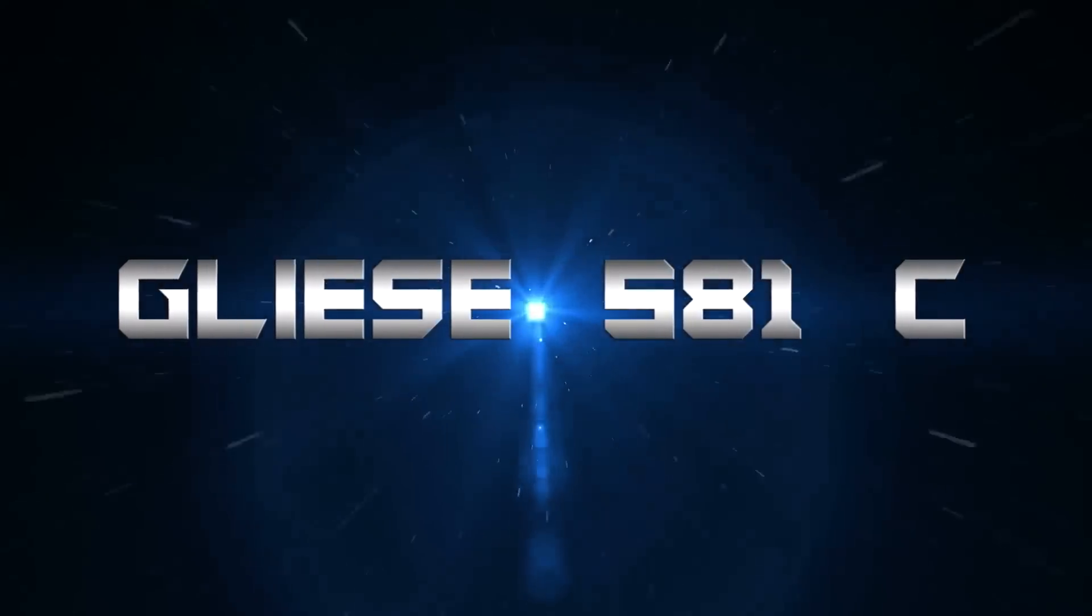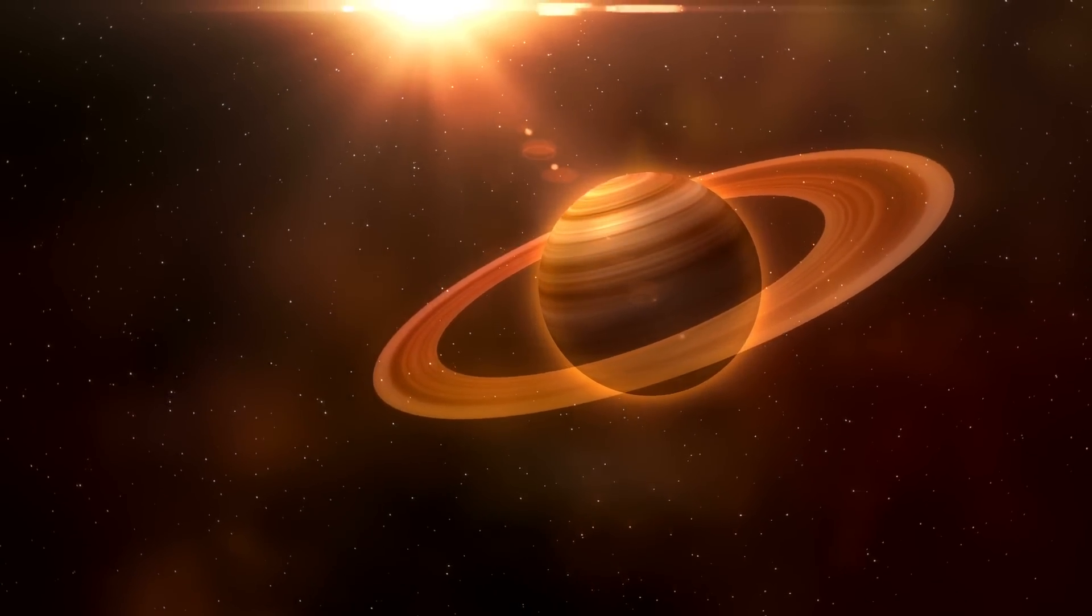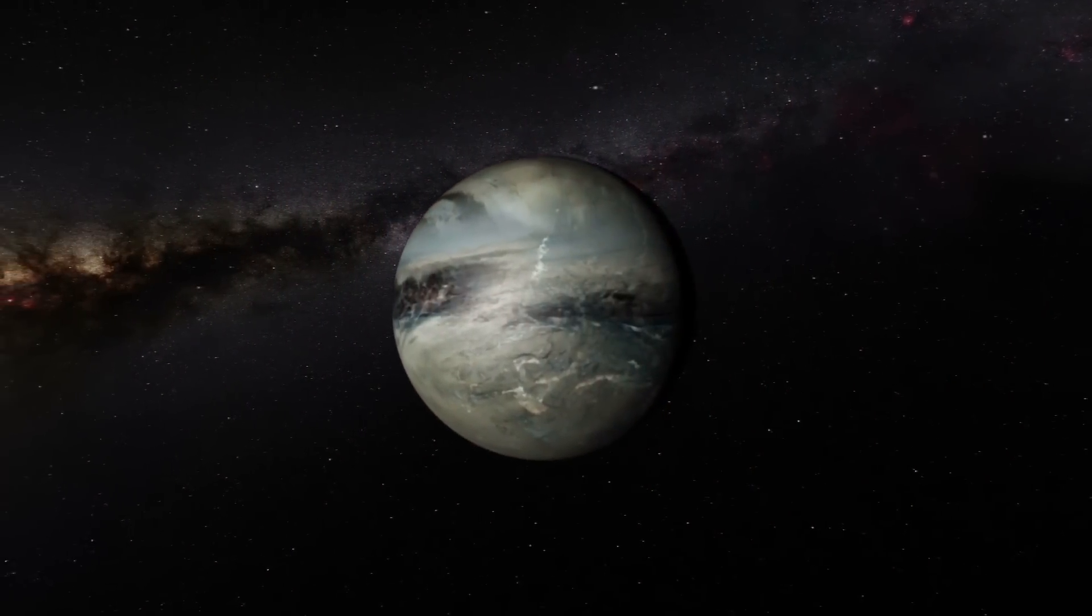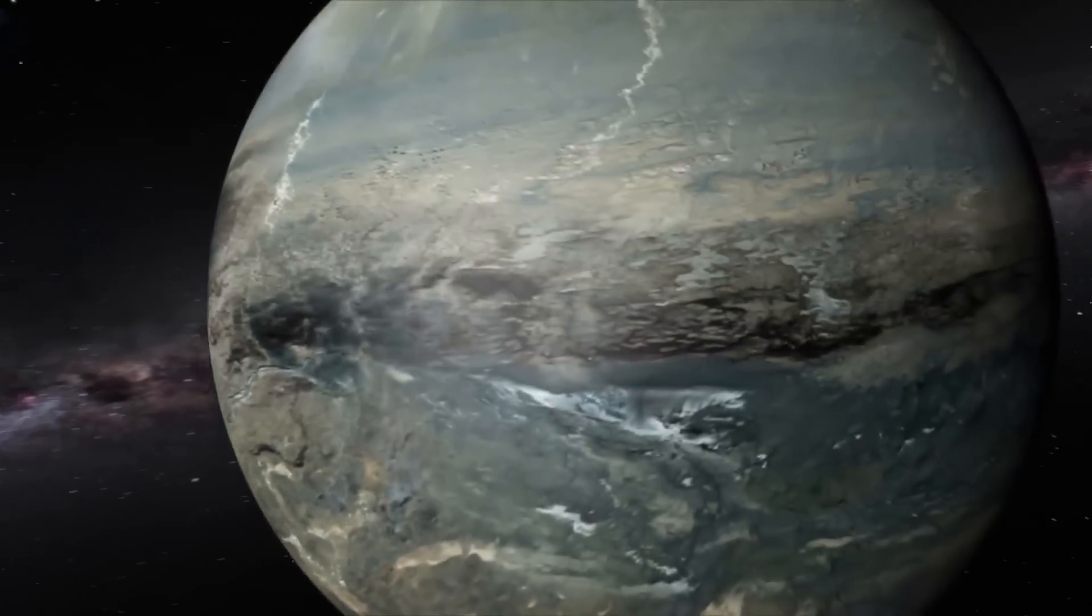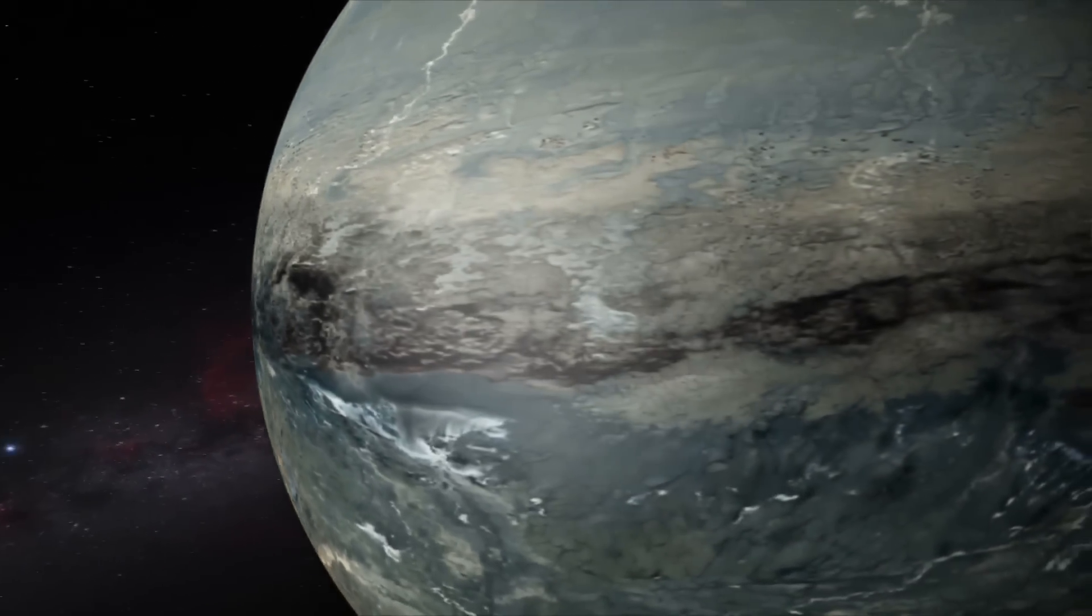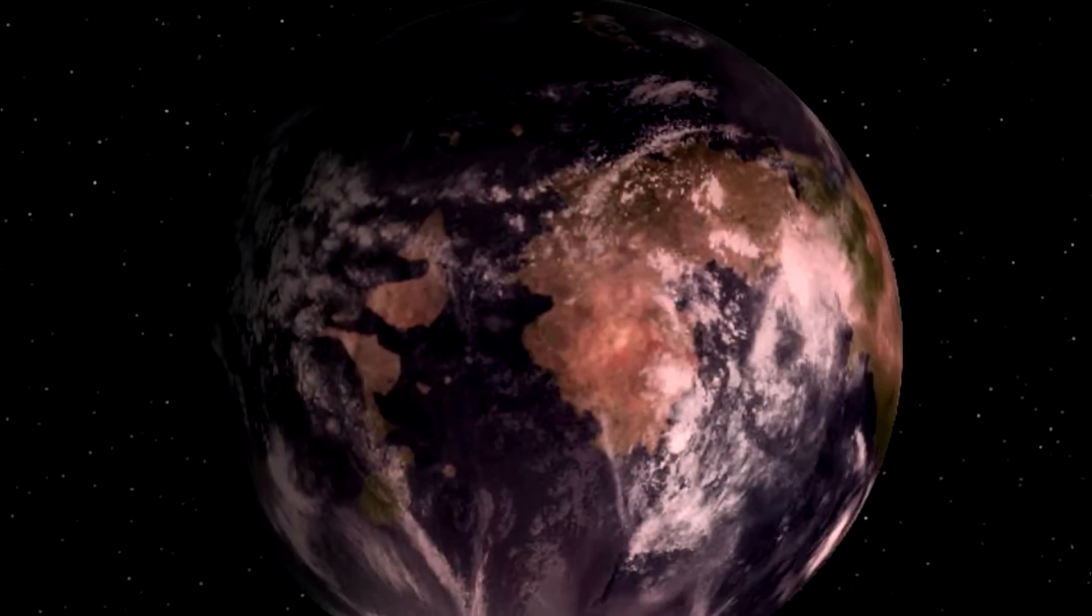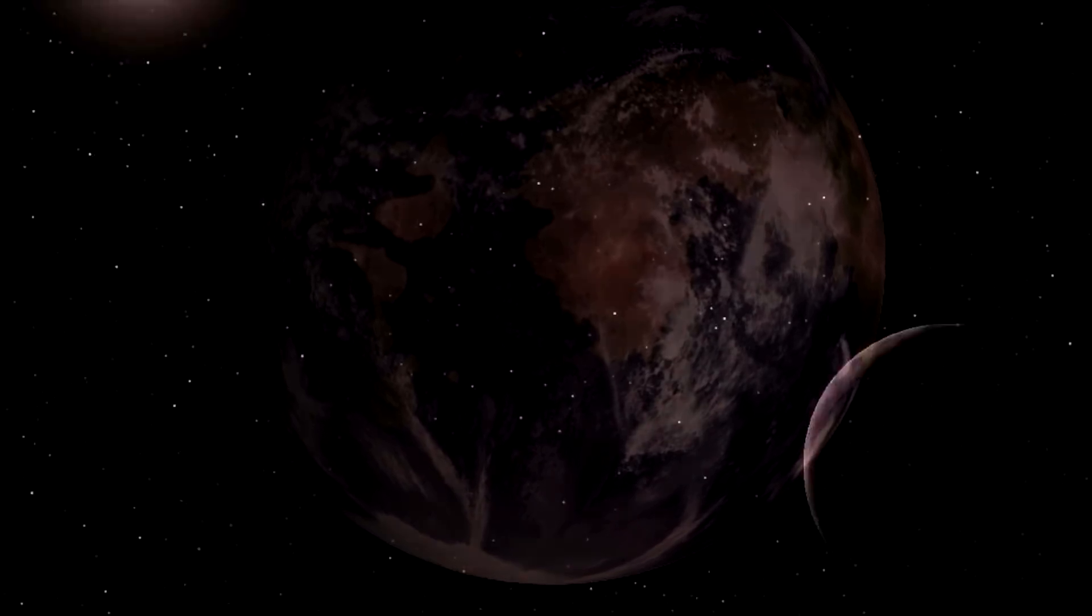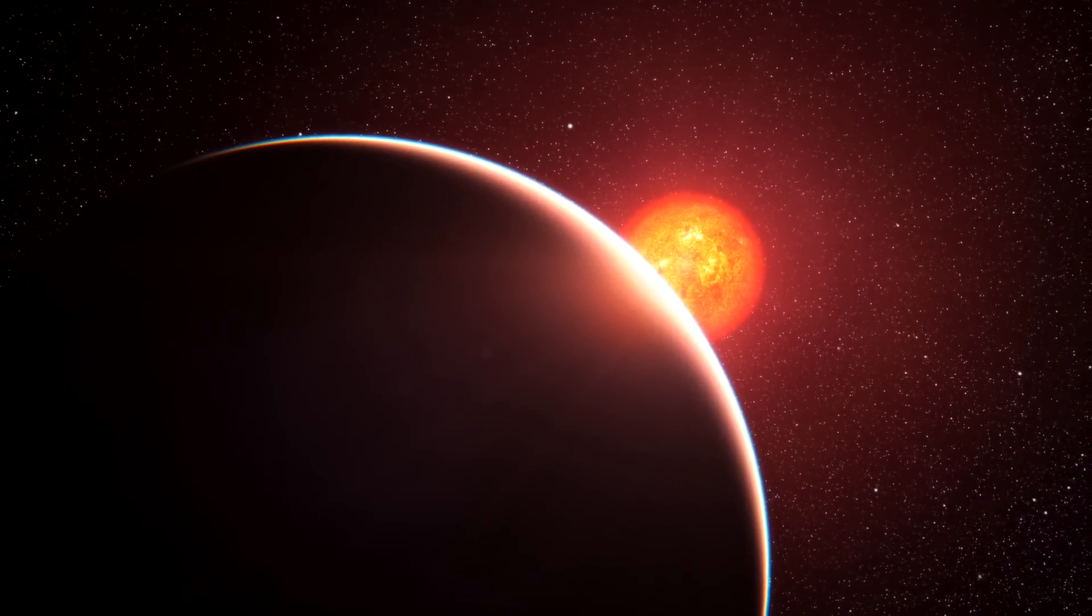GLIESE 581C. Scientists are constantly looking for other planets near our solar system in which life can survive. Part of the reason for this search is to see if humans can achieve interstellar colonization. Another reason is to see if life has taken hold on other planets, therefore proving that we are not alone in this universe. One of the most terrifying planets that we have looked at is called GLIESE 581C. When scientists suggested that this was a habitable planet, they were truly looking for the minimum requirements to support life.